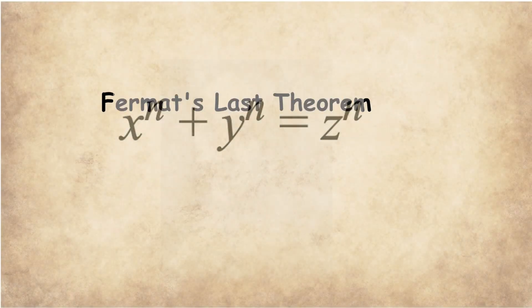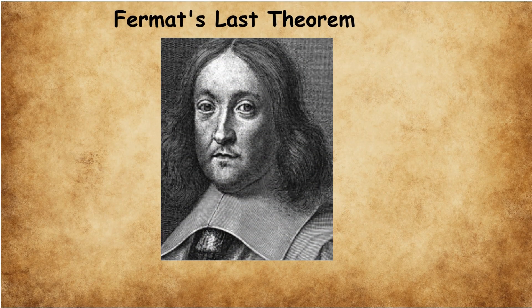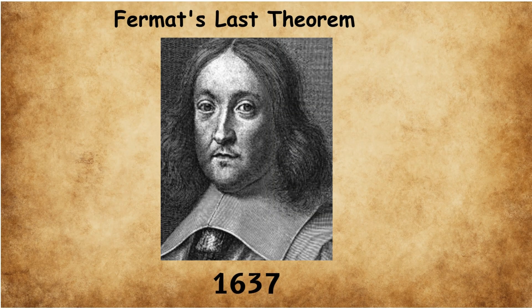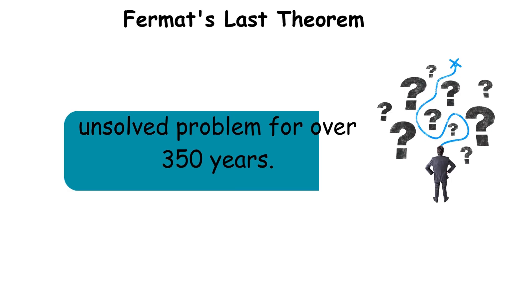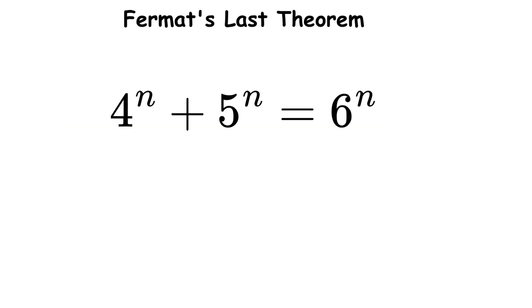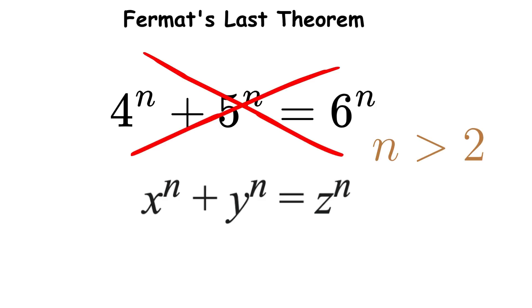Fermat's Last Theorem. French mathematician Pierre de Fermat wrote this deceptively simple statement in 1637 that became mathematics' most famous unsolved problem for over 350 years. The theorem states that no three positive integers can satisfy the equation x to the power n plus y to the power n equals z to the power n when n is greater than 2.